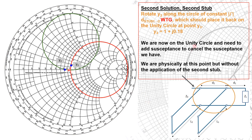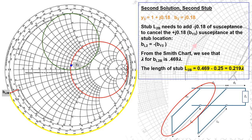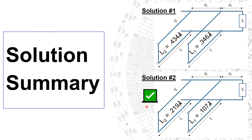For the second solution, we're going to move our point y2 over here to point y3. We find we will have a positive susceptance of 0.18, which puts us on the unity circle. So we just need to add susceptance to cancel and move onto the matching point — we need a minus 0.18 susceptance. We mark that spot on our Smith chart and measure off the distance, finding it is 0.219 lambda — that is L2b, the second solution for the second stub. Here's the summary of the two solutions: first one, L1 is 0.364 and L2 is 0.434. For the second solution, 0.107 and 0.219. Notice these are the smaller ones, so solution 2 is the desirable solution.